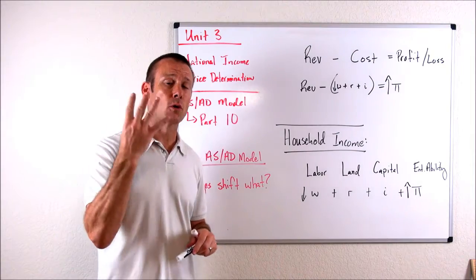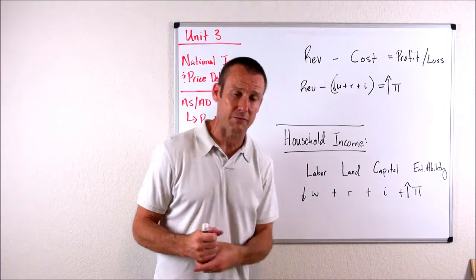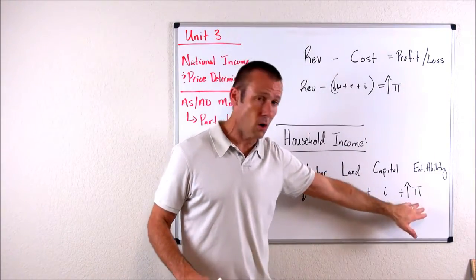There's four types of income that households earn: wages, rent, interest, and profits. If wages go down, profits as we know go up. Both of those are types of income.